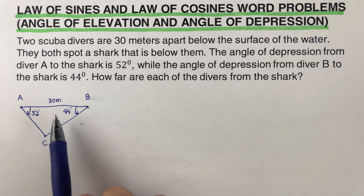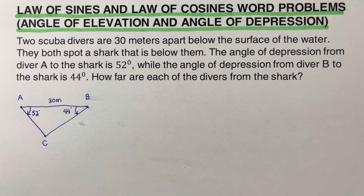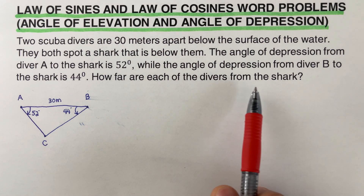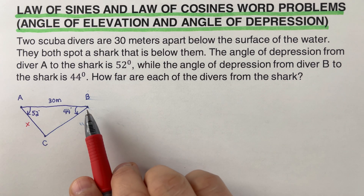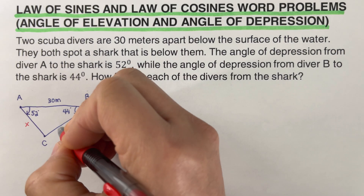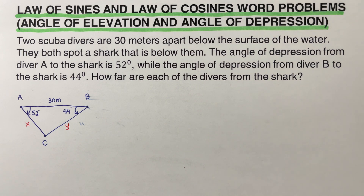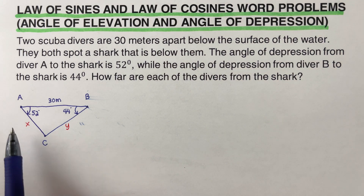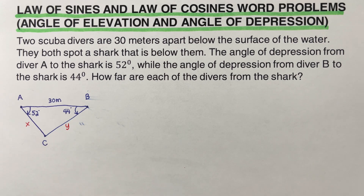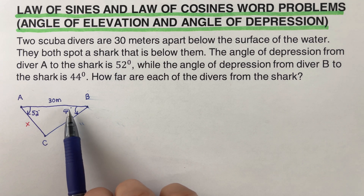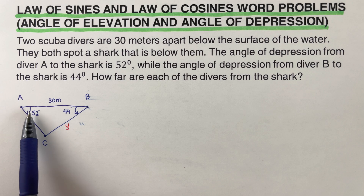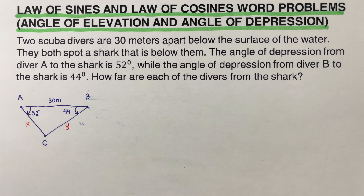Note that the picture is not drawn to scale. We need to determine the distance from each diver to the shark. The distance from diver A to the shark is labeled x, and the distance from diver B to the shark is labeled y. We can use the law of sines. The partners are: angle C with side 30 meters across from it, angle 44 with side x, and angle 52 with side y. We are missing angle C.